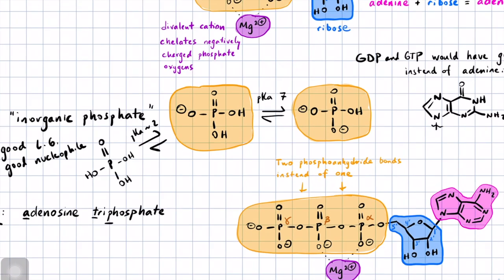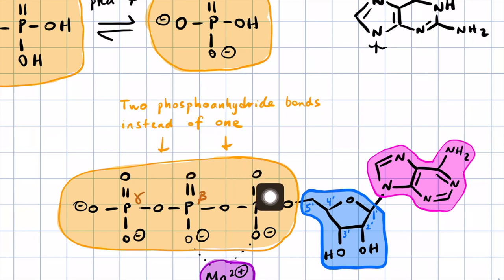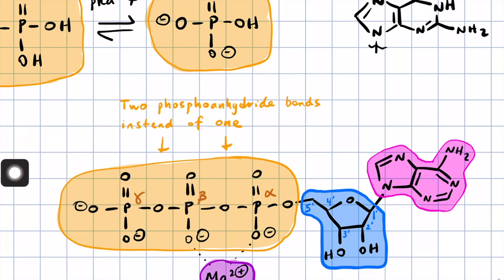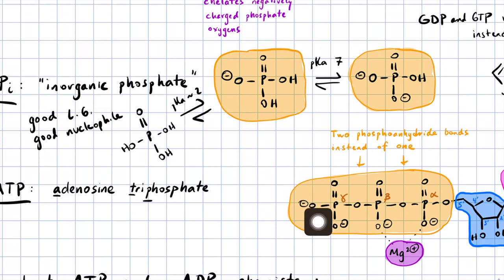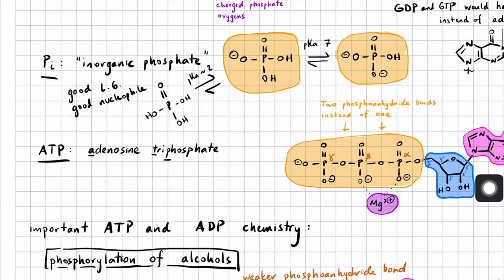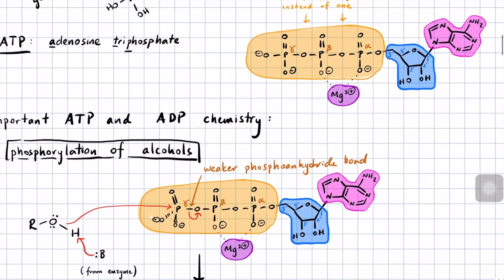ATP is just like ADP, only we've got two phosphoanhydride bonds instead of one. To keep things straight, we give letters alpha, beta, and gamma to the three phosphoryl groups in ATP, starting with the one closest to the sugar. Many reactions involve some nucleophile attacking the gamma phosphoryl group with ADP as the leaving group, and that reaction is sometimes called phosphorylation. Let me give you an example — phosphorylation of alcohols.